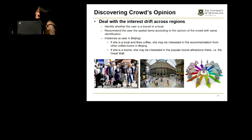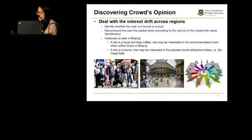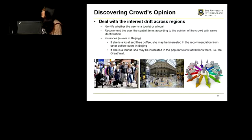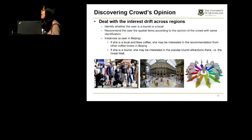We try to discover the cross opinion to deal with interest drift across regions. First, we need to identify whether the user is a tourist or local at the target region. Then we recommend spatial items according to the opinion of users who share the same identification. For example, for a target user in Beijing, if the user is a tourist in Beijing, we make a recommendation based on the opinion of other tourists in Beijing. Otherwise, if they are a local, we make a recommendation based on the opinion of other locals in Beijing.